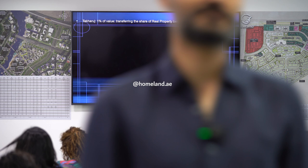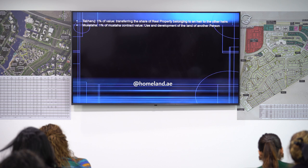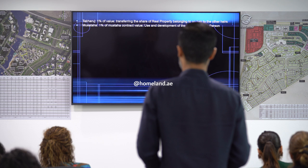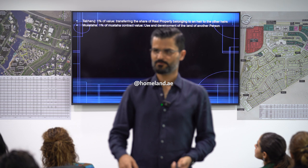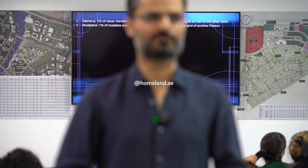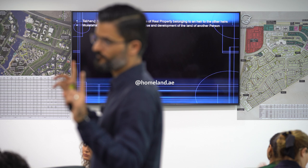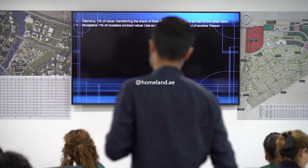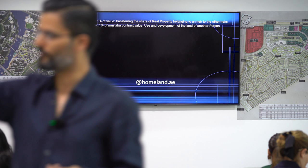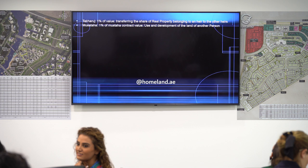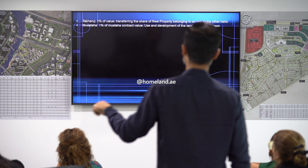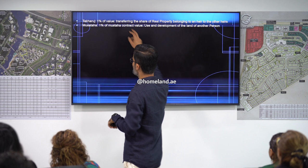Musataha is a Sharia-compliant joint venture agreement where you own the land and another party develops on it. The cost of registering Musataha is 1% of the contract (Musataha) value. Usufruct right — the right to use and benefit from a property owned by someone else — costs 2% of the property value to register. Mortgage registration fee is 0.25% of the loan value, not the property value.